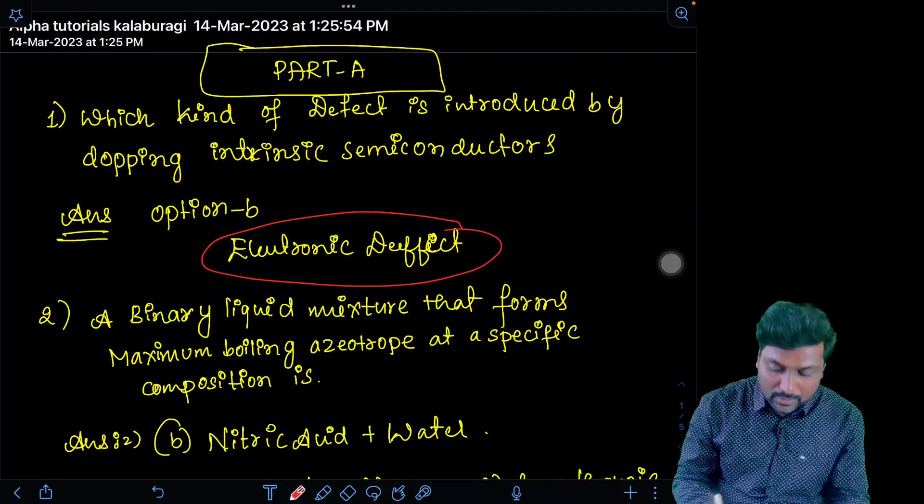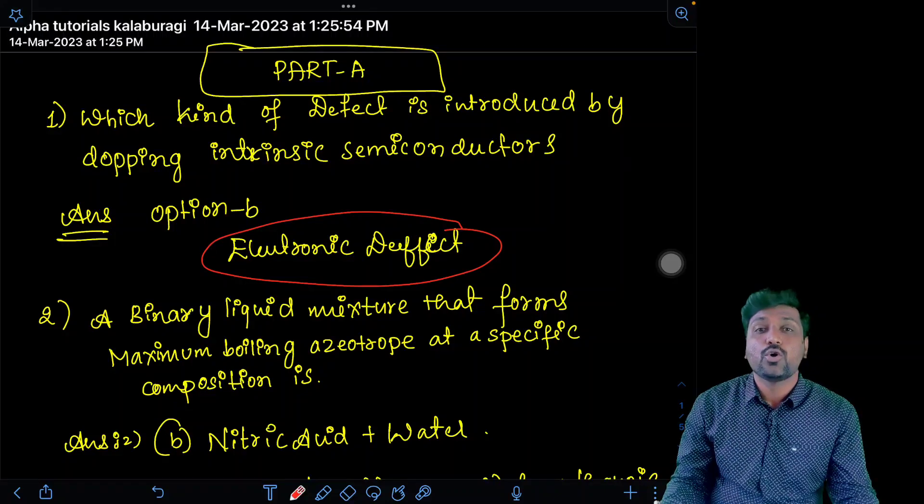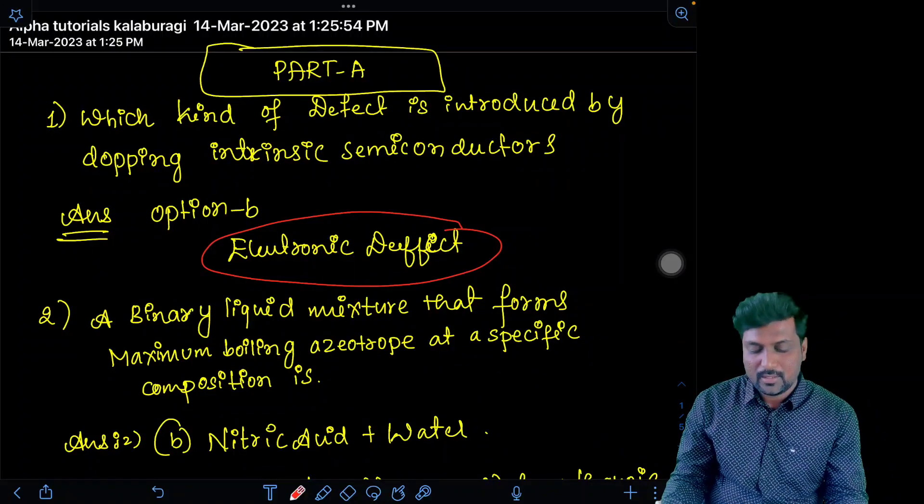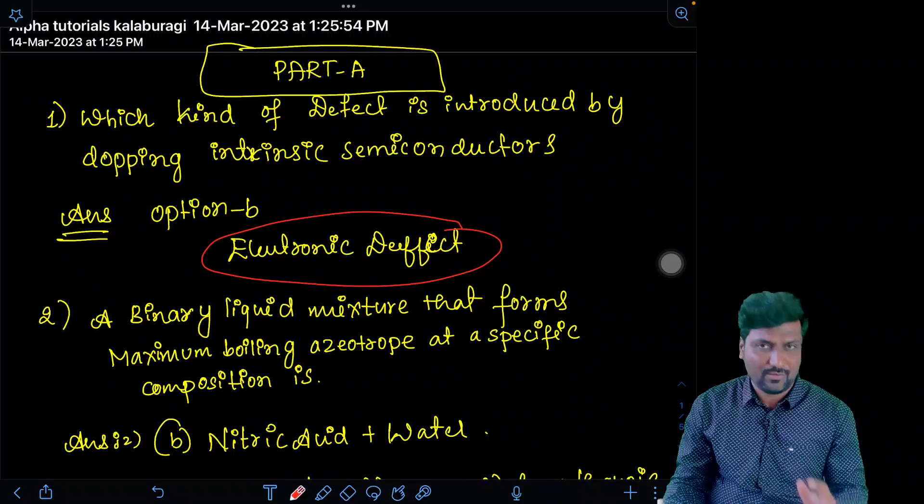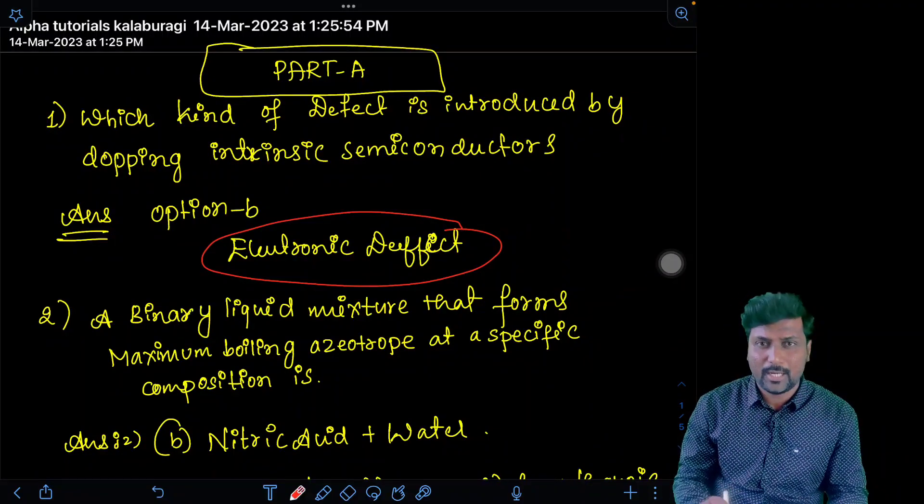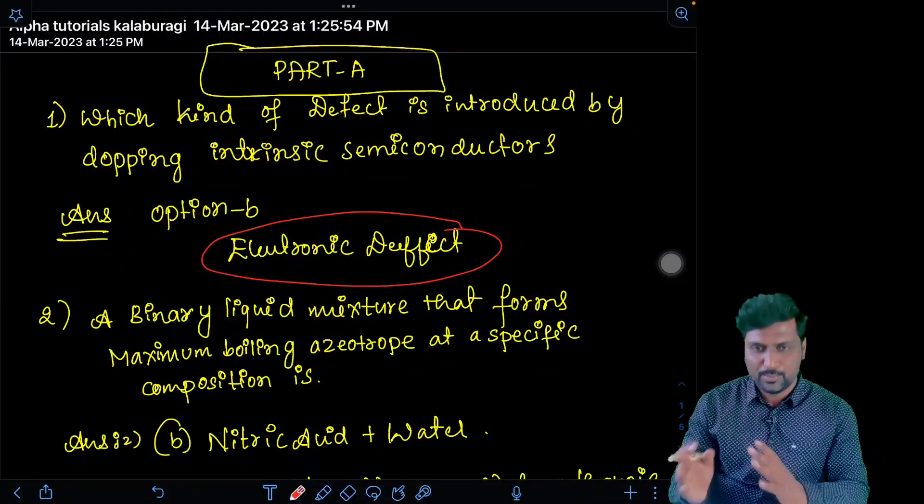n-type of semiconductor. If it is added with the poor elements like 13 group elements - boron, aluminum, gallium, indium, thallium - p-type of semiconductor. So totally it is an electronic defect. That is option B. Don't go with the word dislocation defect, Schottky defect or any other defect. It is purely electronic defect, either rich or poor.